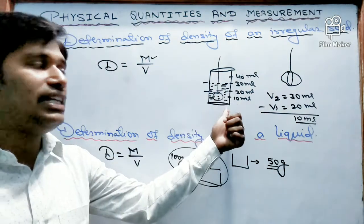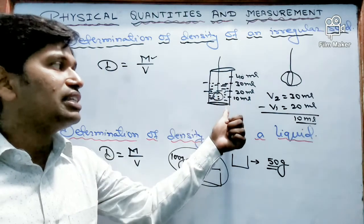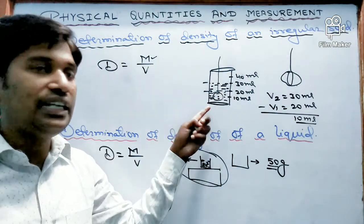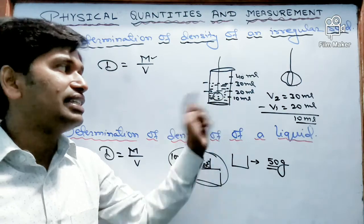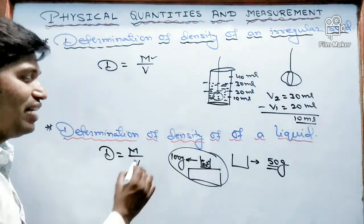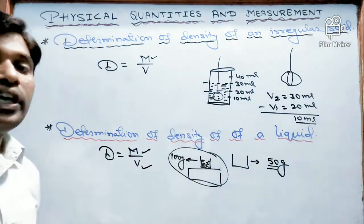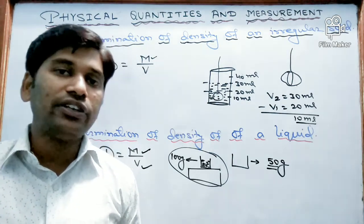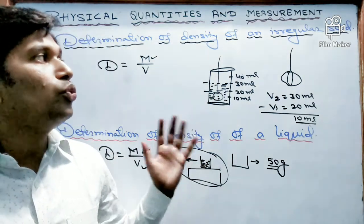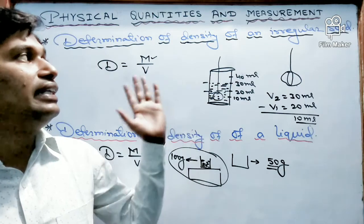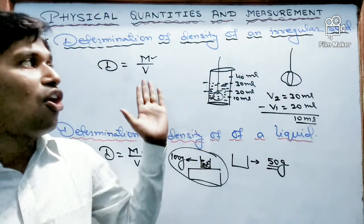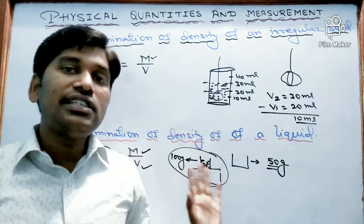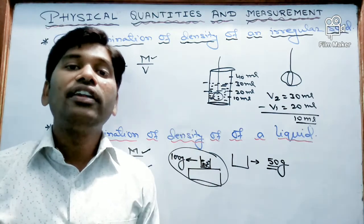As we have seen with the measuring cylinder, we pour that liquid in and can see its volume directly. After finding both mass and volume, we can determine the density of the liquid. So these are the two ways to find the density of an irregular solid and the density of a liquid.